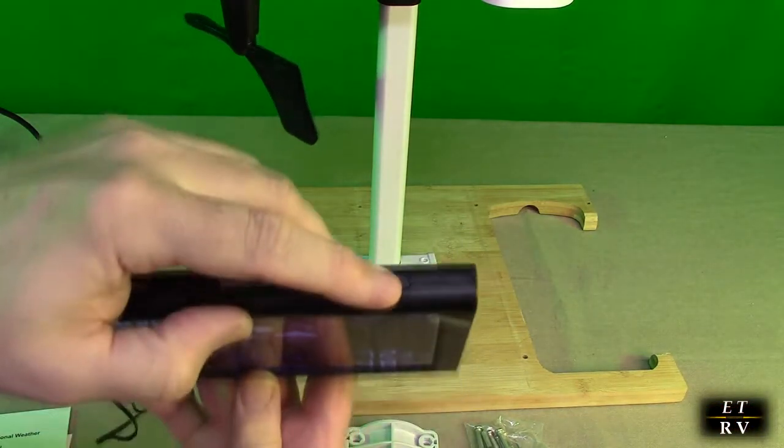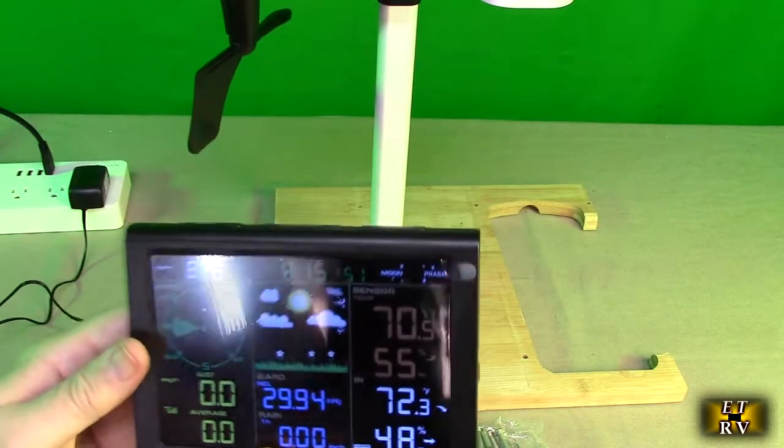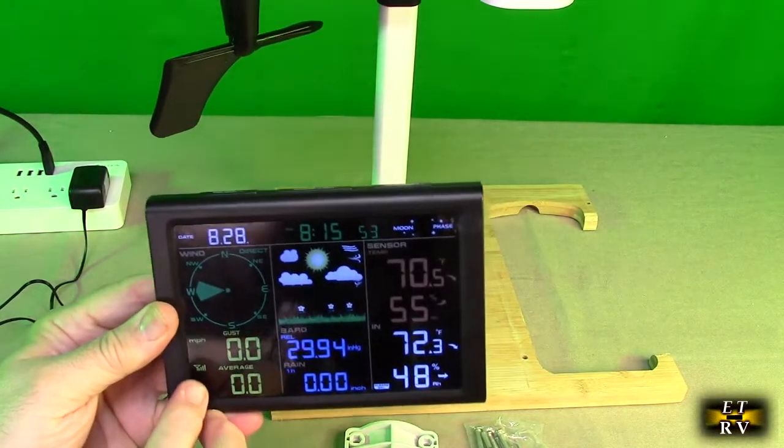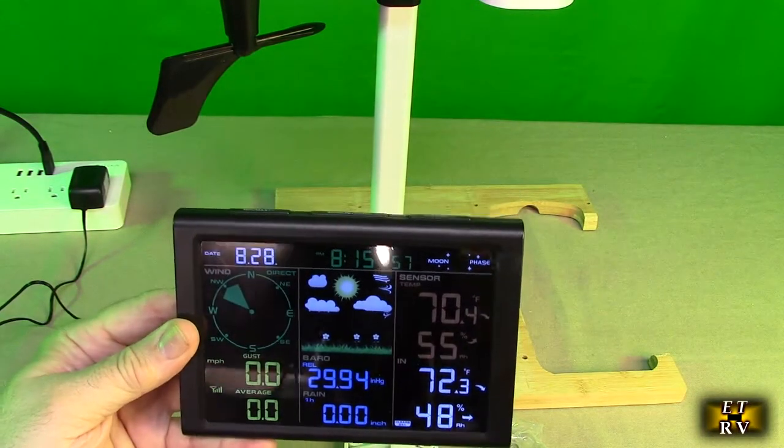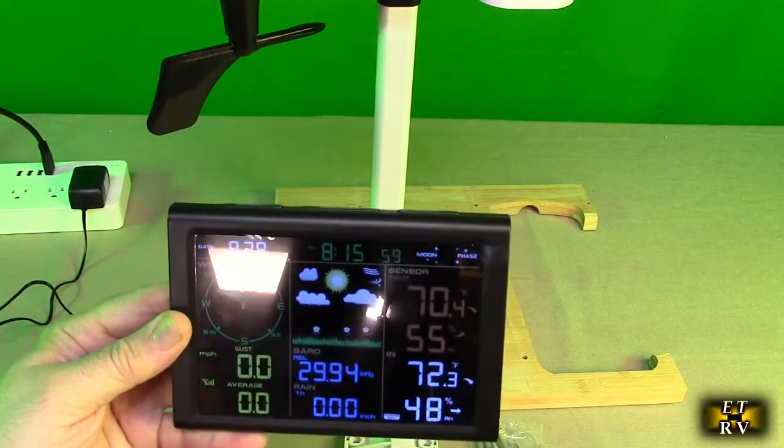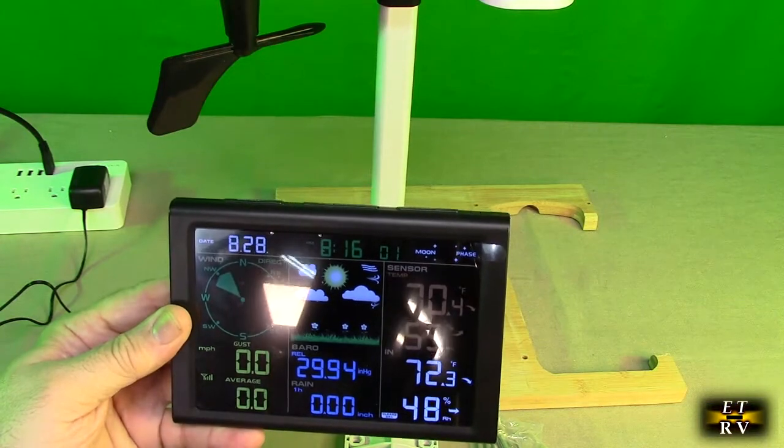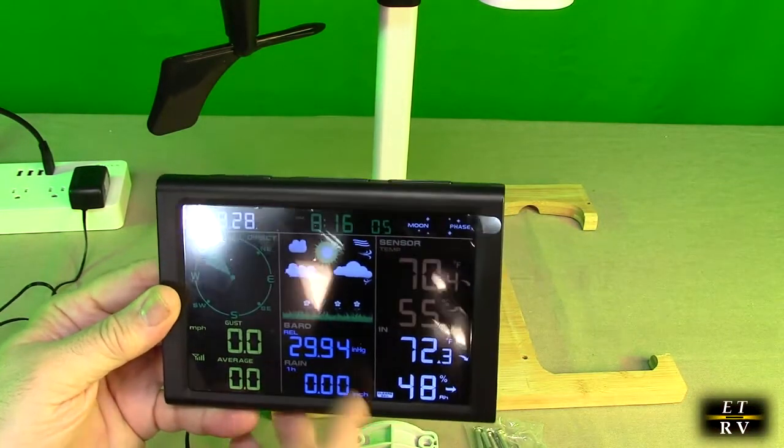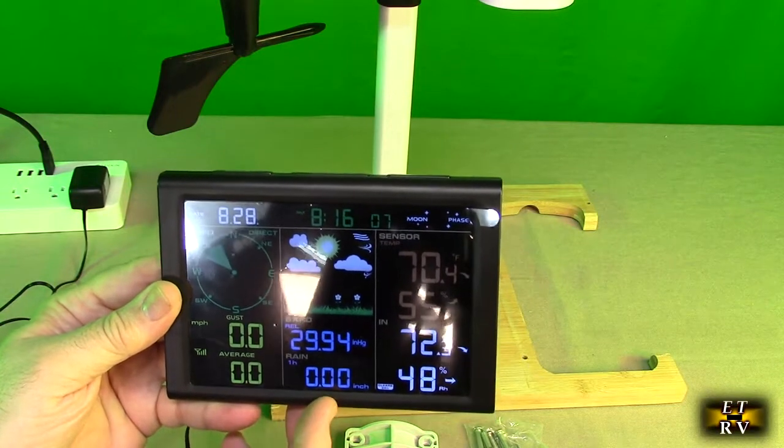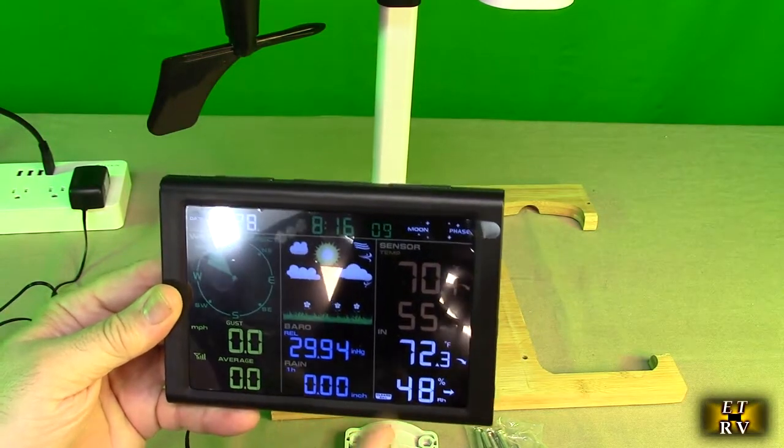You can also hold down the channel button right there and that will allow it to seek and it will get the data. So right now you can see it's showing the wind direction. There's no wind speed because I'm not rotating it but it has barometric pressure, it's got the rain gauge, humidity percentages and temperatures.